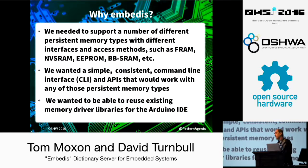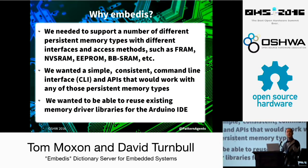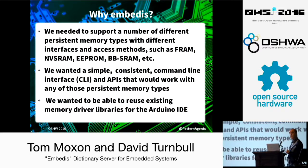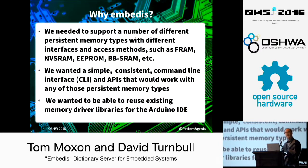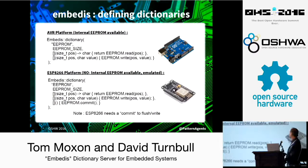Supporting a number of different permanent storage types all at the same time has been problematic up to this point. With Embedus we can treat the same interface for NVS RAM, flash, SD cards with a simple command line interface and a consistent API. There are a lot of good drivers out there for things like MRAMs and NVS RAMs from Adafruit and SparkFun, and we wanted to allow you to lash those up very quickly and reuse a lot of the other open source code people have written for those permanent storage devices.